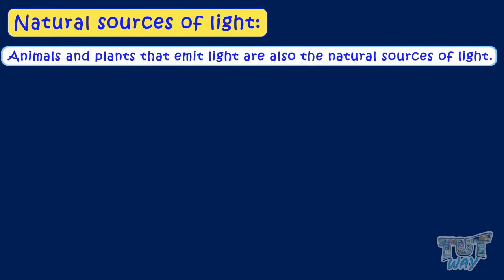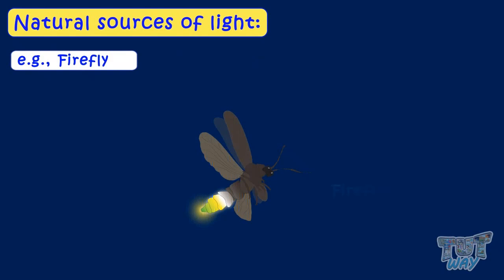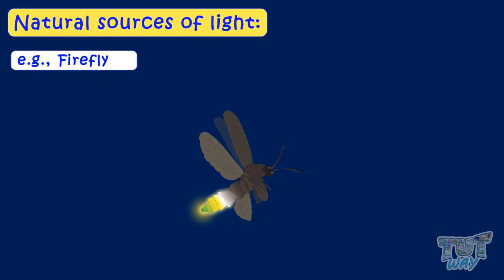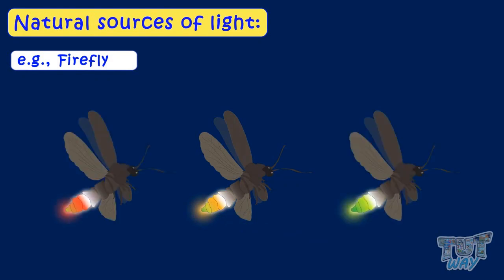Let's see a few of them. Fireflies, also known as lightning bugs. There are many varieties of fireflies. They have light-emitting organs below their abdomen. They produce light of different colors like yellow, green, or red.